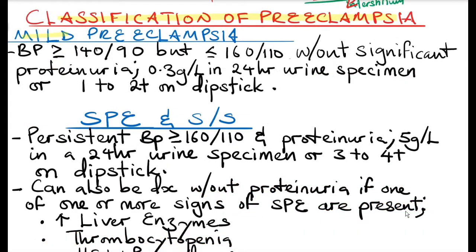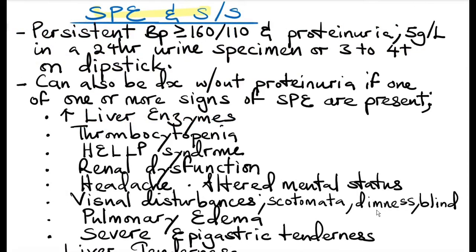Classification of preeclampsia: there is mild preeclampsia and severe preeclampsia. Mild preeclampsia is characterized by a blood pressure of systolic more than 140 and diastolic more than 90, but systolic less than 160 and diastolic less than 110, with proteinuria of at least 0.3 grams in a 24-hour urine specimen or 1 to 2 plus on the dipstick examination. Blood pressure should be measured at least twice, at least 4 to 6 hours apart.